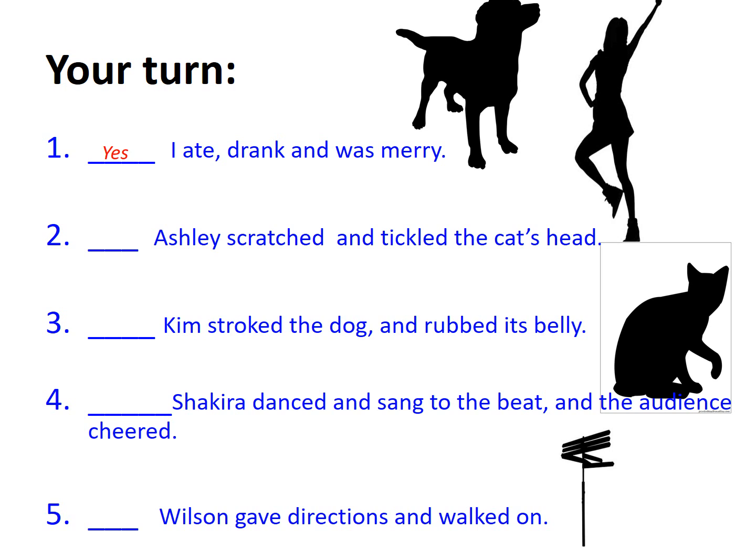'Ashley scratched and tickled the cat's head.' This is also correct. I don't need to split up 'scratched' and 'tickled.' They're both verbs that Ashley performed when he was playing with the cat, and if I broke them up with a comma I'd be confusing you as a reader as to why.